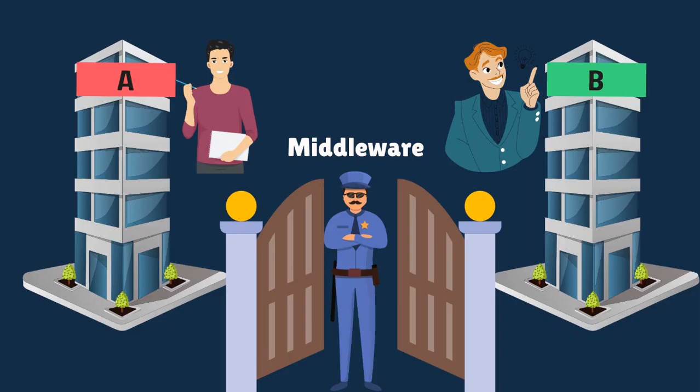Imagine there are two types of buildings: building A and building B. In building A there is a user who is an employee, and in building B there is a businessman. Now if you want to meet the businessman, at the gate there is a guard. You ask the guard, the guard gives you instructions - go to building B for the businessman, or building A for the employee. That security guard acts as the middleware.